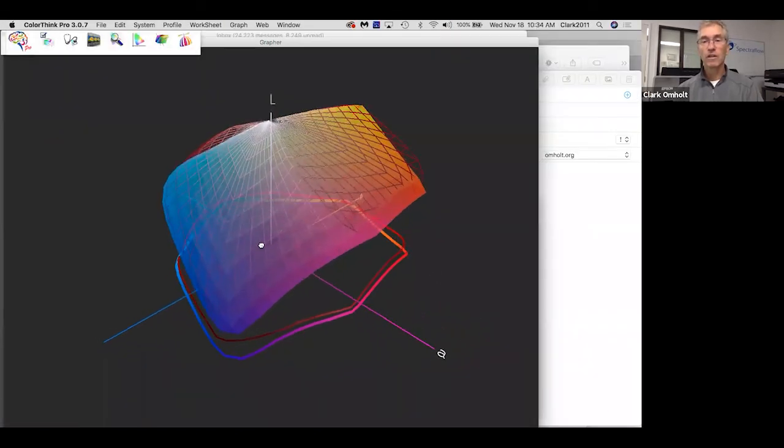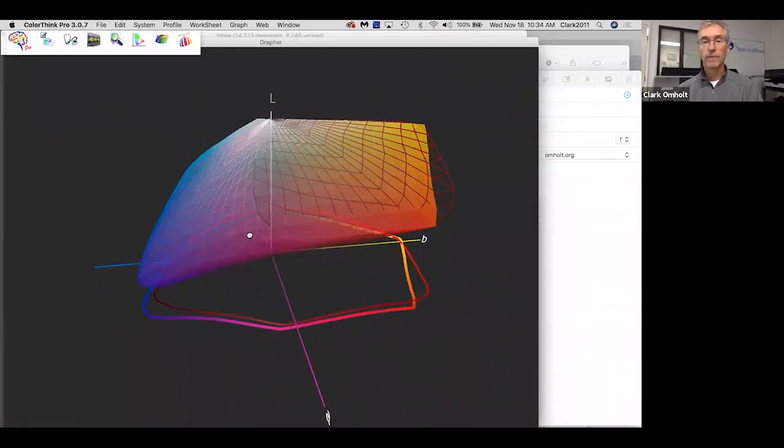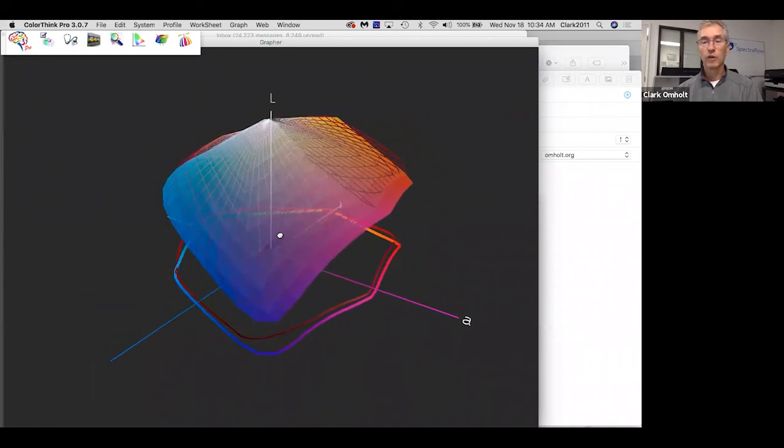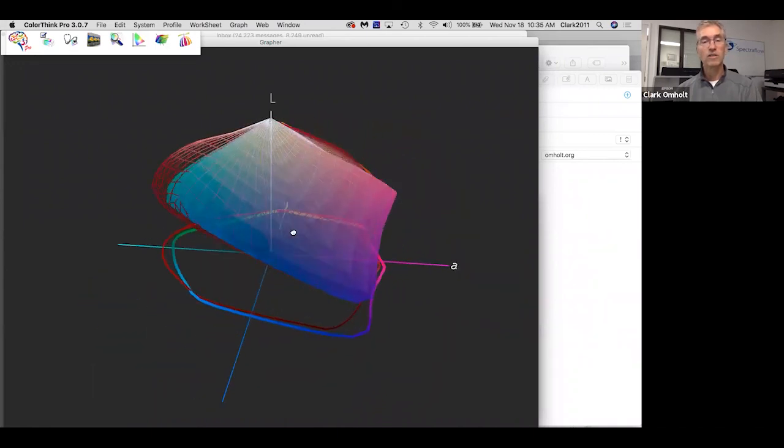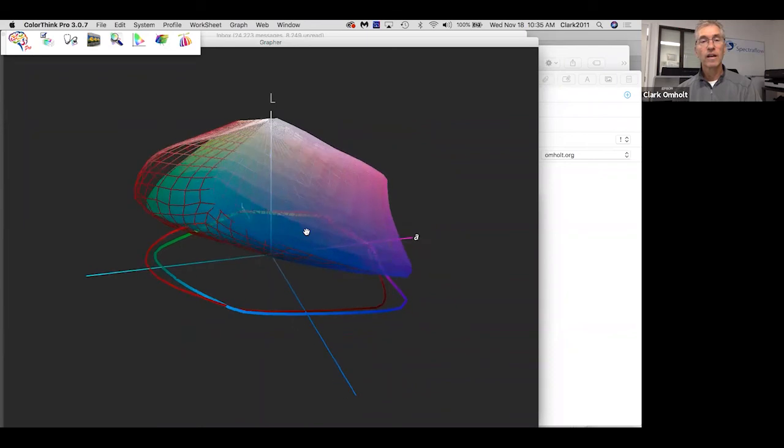Let me see if I can bring up a different application. This is ColorThink. Now we're seeing the same profiles in 3D, so you can kind of see the lightness dimension as well.